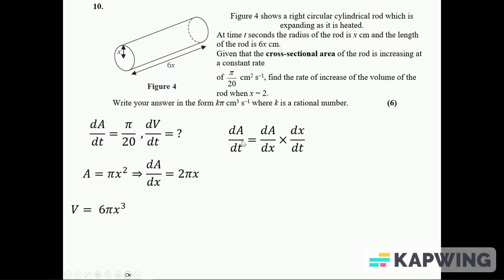Sticking the dA over dt into here and the dA over dx into here, it'll give us the dx over dt. There's the dA over dt, there's dA over dx. I can do a bit of cancelling and divide both sides by 2x, and I get dx over dt is 1 over 40x.